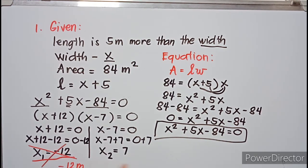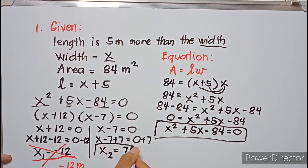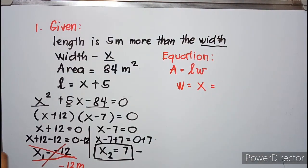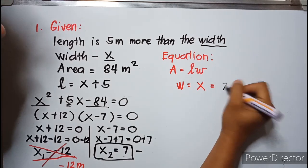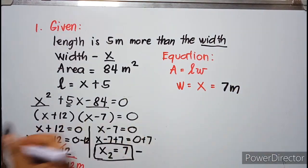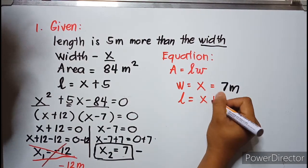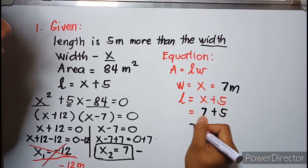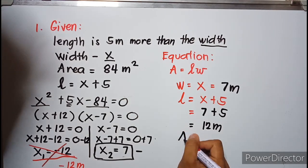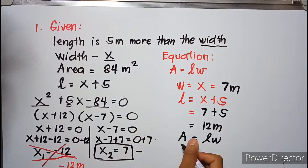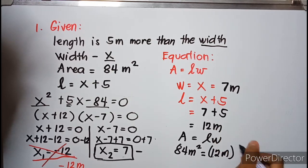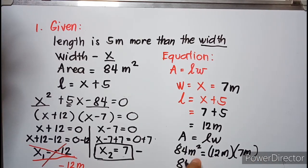Therefore our width = x = 7 meters. Our length = x + 5 = 7 + 5 = 12 meters. Checking: Area = Length × Width = 12 × 7 = 84 square meters. 84 m² = 84 m². Verified.